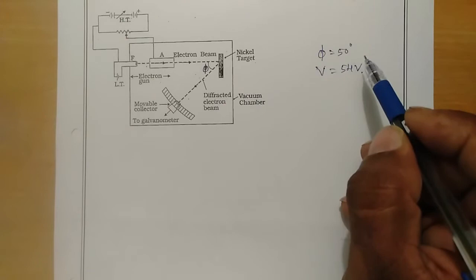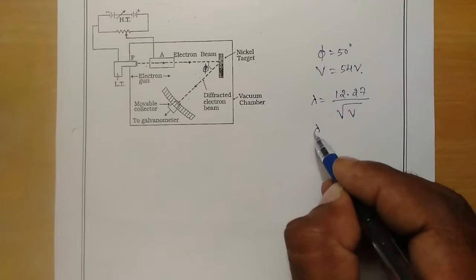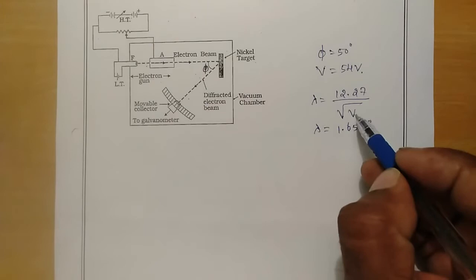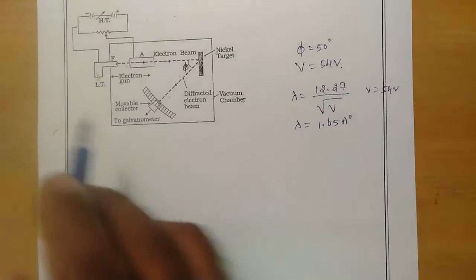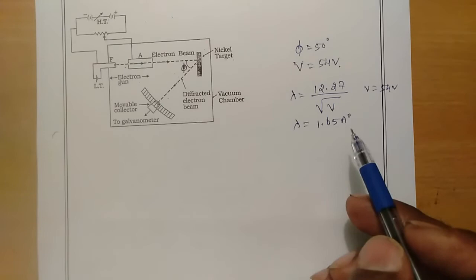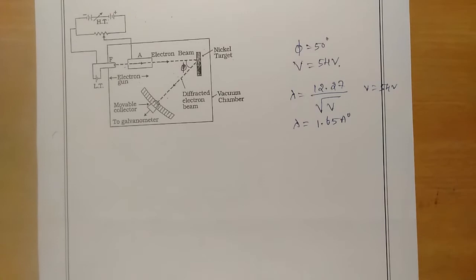If I put this value of voltage — 54 volts — into the formula λ = 12.27 divided by square root of V, I get λ = 1.65 Ångströms. That is, substituting V = 54 volts gives the de Broglie wavelength associated with these accelerated electrons as 1.65 Ångströms. Now we have to show that from the experiment, the de Broglie wavelength associated with the electrons accelerated by this potential difference will also be equal to 1.65 Ångströms.